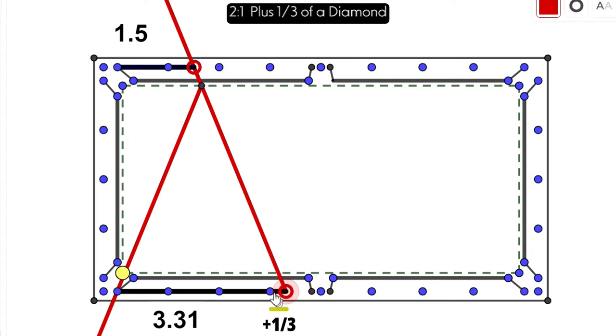This is actually going to work as an adjustment system. However, if we go to other points on the table, it breaks down. Let's go to six again.